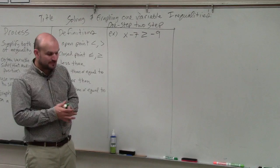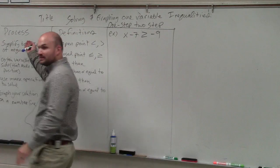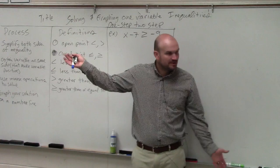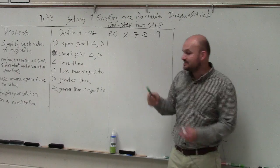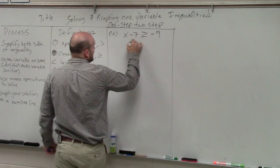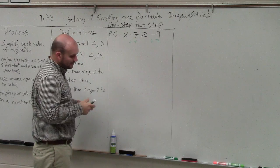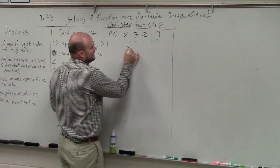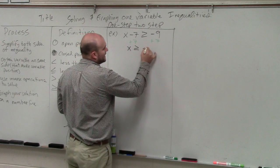So we have x minus 7 is greater than or equal to negative 9. We're going to follow our process, just like we did before. There's really only one operation that's being applied to the variable, which is being subtracted by 7. So we're going to add 7 to both sides. Therefore, I'm going to attain x is greater than or equal to negative 2.